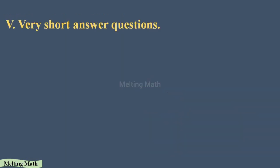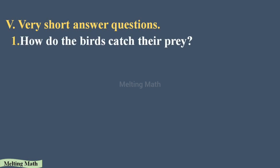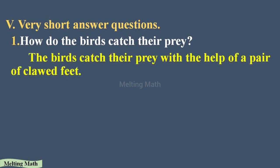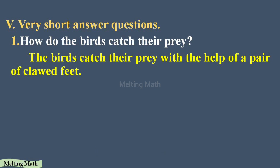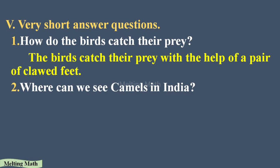Section five: very short answer questions. Question one: how do birds catch their prey? Prey means food — insects or food. The bird catches its prey with the help of a pair of clawed feet. Clawed feet are the legs; the bird can grab its food using its feet.